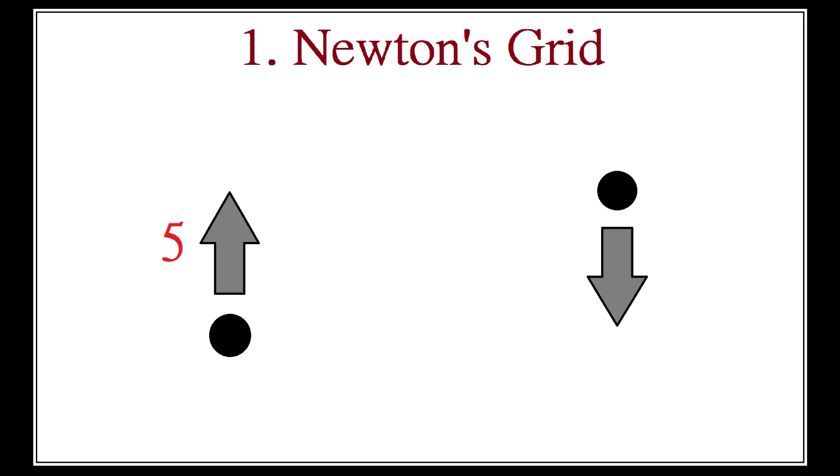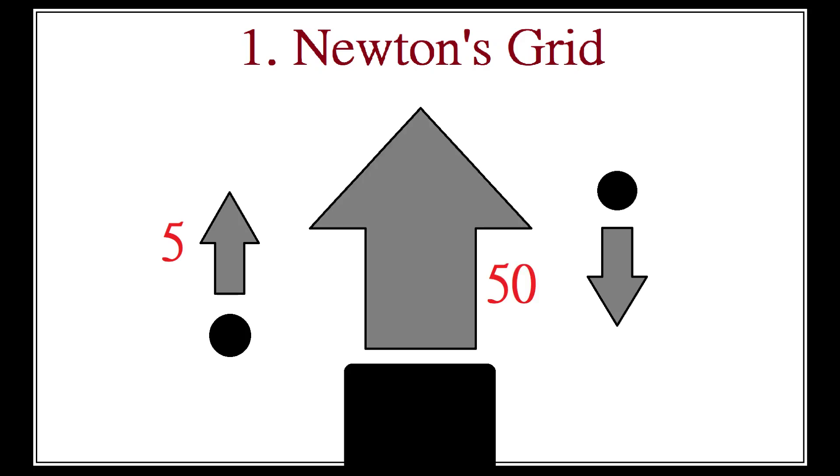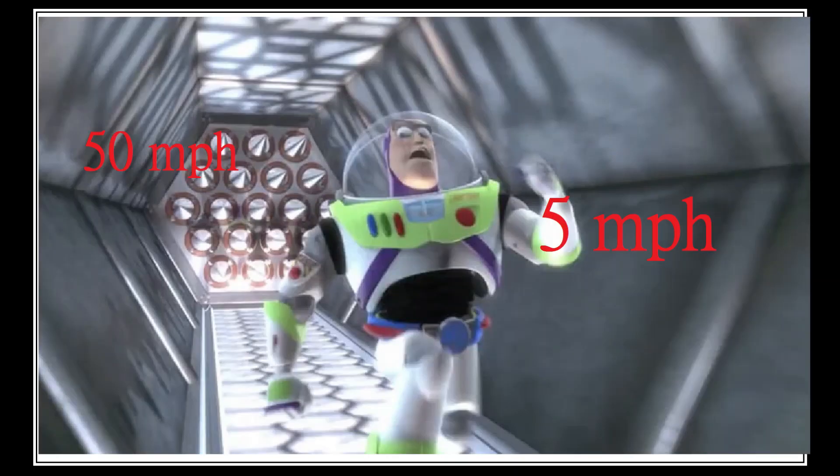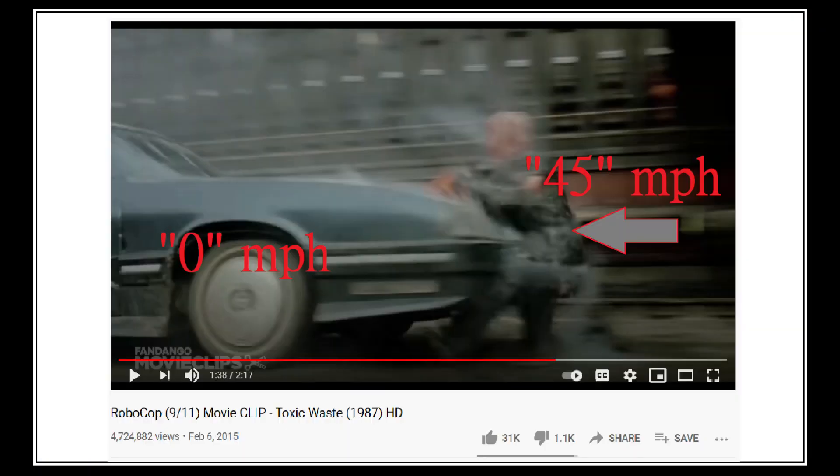If I'm walking north at 5 miles an hour, and a car is driving north at 50 miles an hour, then from my point of view, the car is moving at 50 minus 5 equals 45 miles per hour northwards, while from the car's point of view, I am moving 45 miles per hour southwards towards it. But hold on!